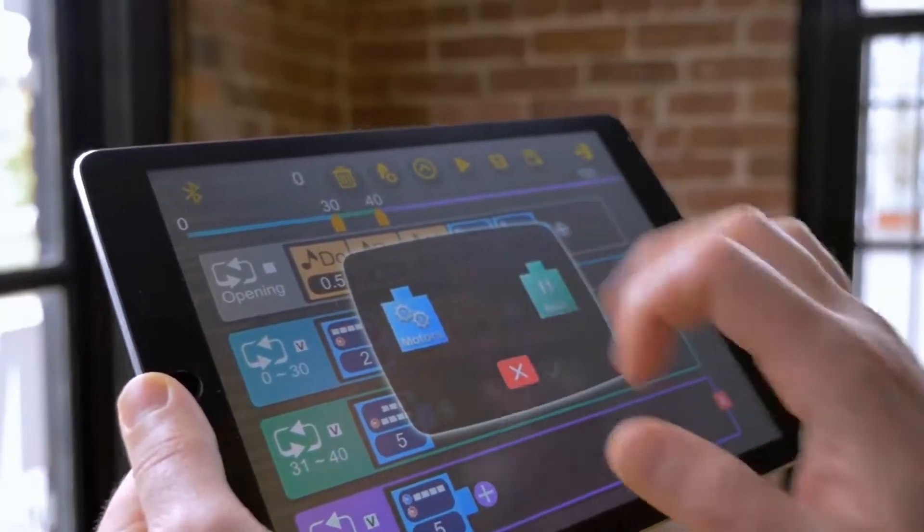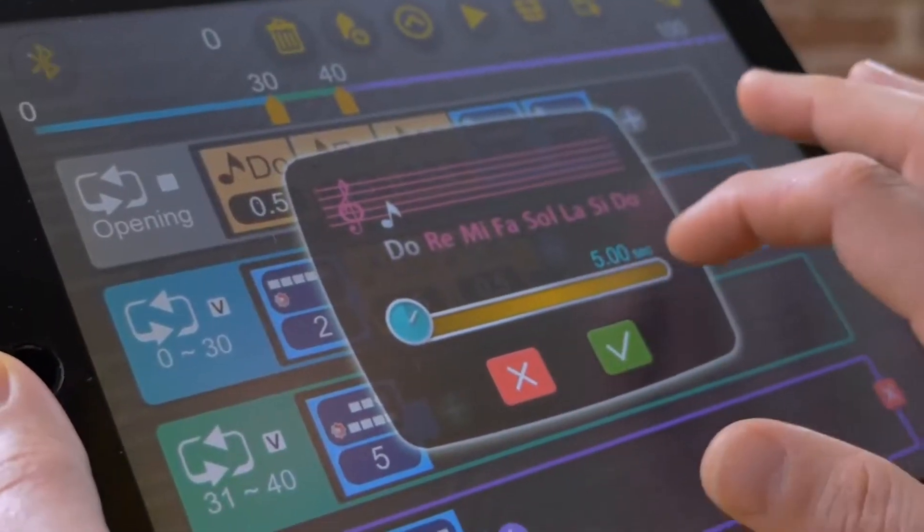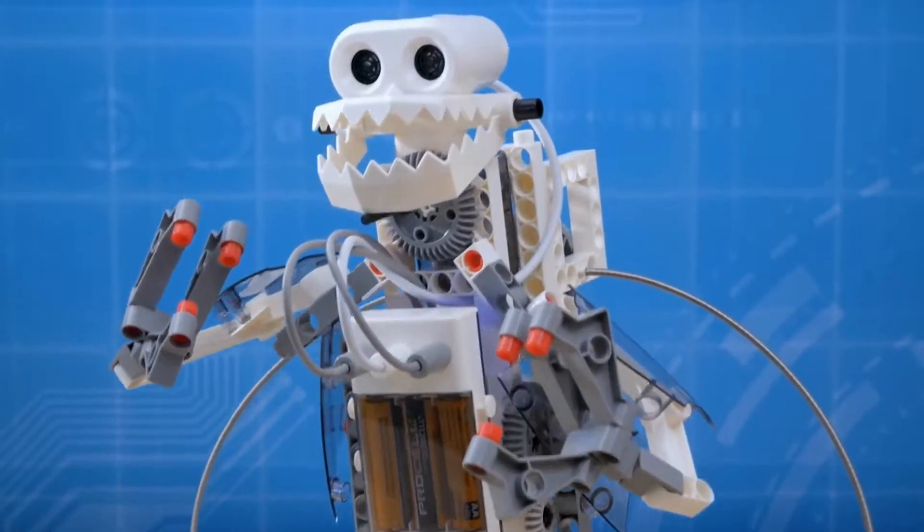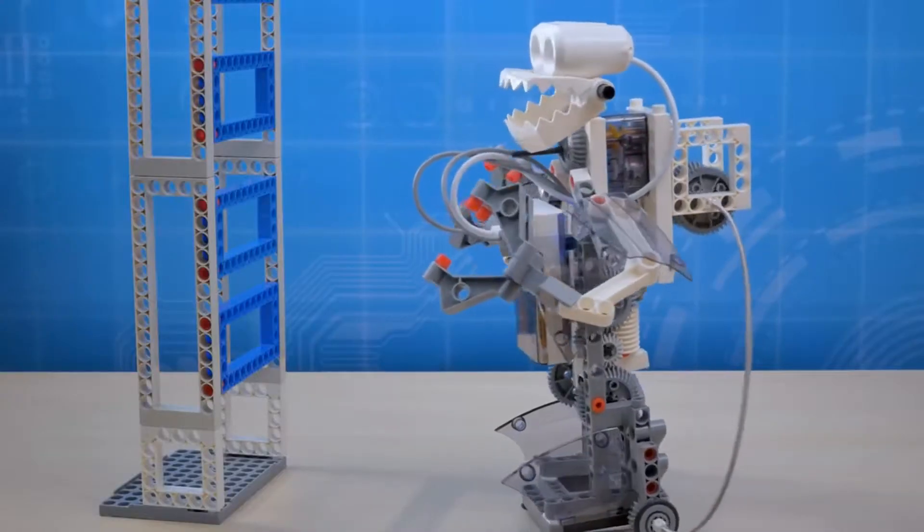The visual block-based coding language makes controlling your robotic creations fun and easy. Create a humanoid robot that can pivot to avoid obstacles in its path.